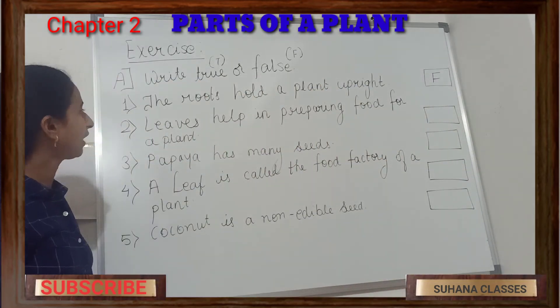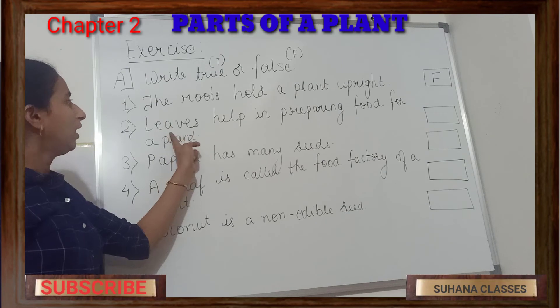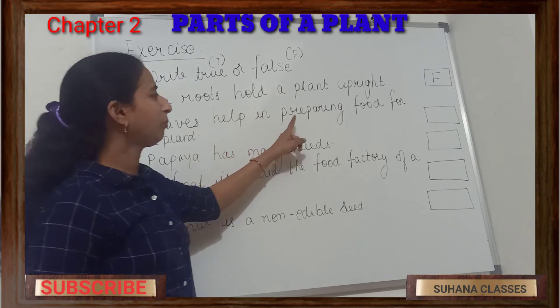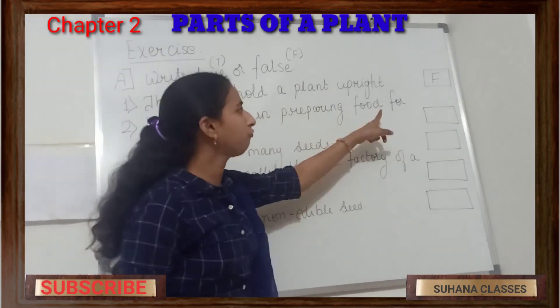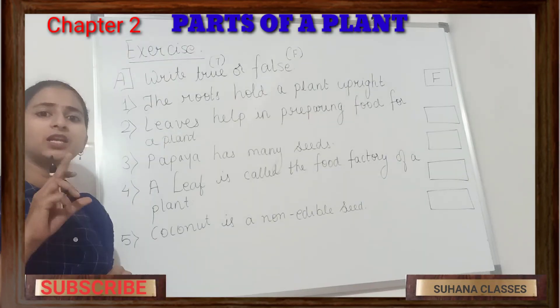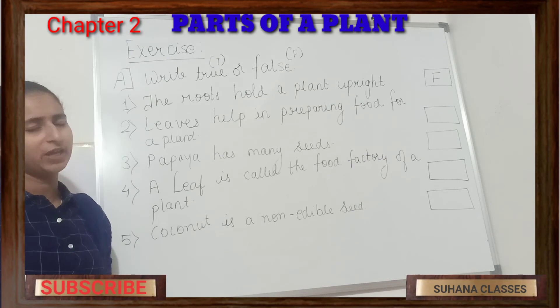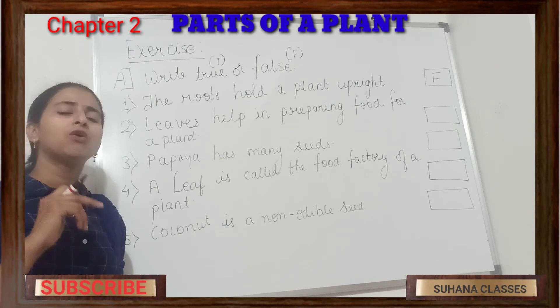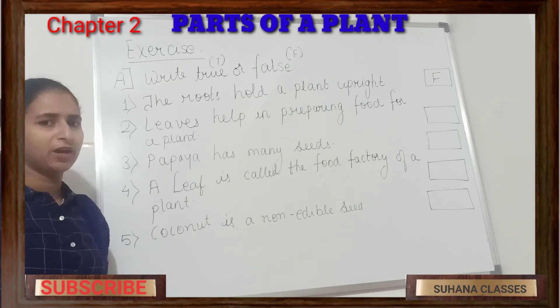Next: Leaves help in preparing food for the plant. Yes, leaves are the place where food is prepared for the whole plant. So this statement is true.